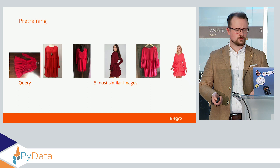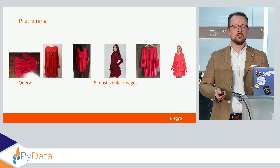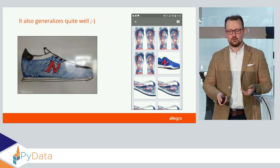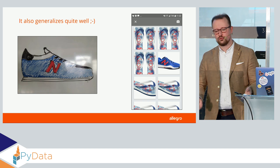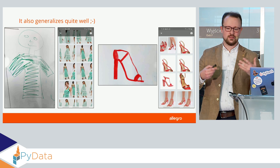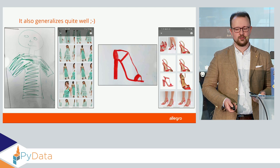But what would happen if you didn't actually have a picture — just some vague representation of what you'd like to buy in your head? If you can draw, maybe you can draw it and maybe it works. We tried that on a New Balance shoe and it turns out there is one that's quite similar. No one has to know how to draw — some doodling may be enough. It turned out that our model generalizes quite well and simply drawing something is enough to find it on Allegro.